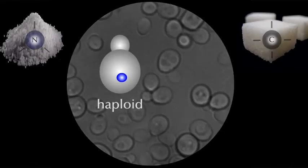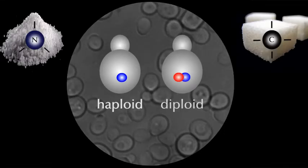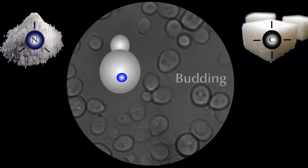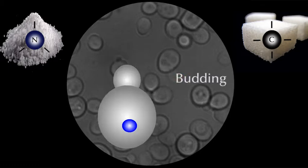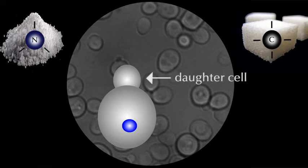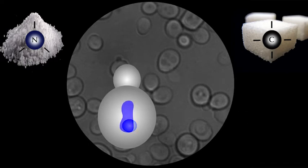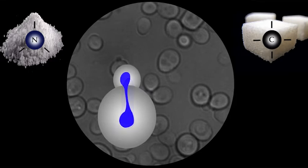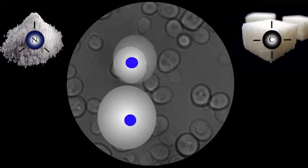Yeast cells can exist stably either as haploids or as diploids. Both forms can reproduce asexually by budding, the most common mode of vegetative growth in yeasts. A small bud, or daughter cell, is formed on the surface of the mother cell. The bud grows nearly to the size of the parent cell, the nucleus divides, and the two cells separate. The cycle begins again for both cells.